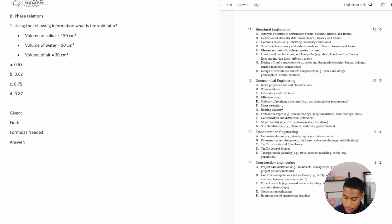Number one says using the following information, what is the void ratio? So they give us a volume of solids equal to 150 centimeters cubed, volume of water is 50 centimeters cubed, and the volume of air is 30 centimeters cubed. All right, so where do we start? So we first start by writing down the given information. They give us the volume properties.